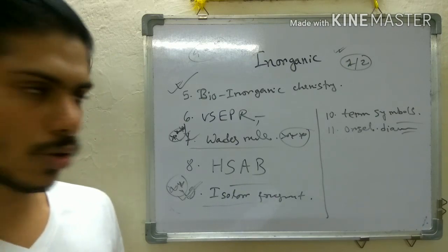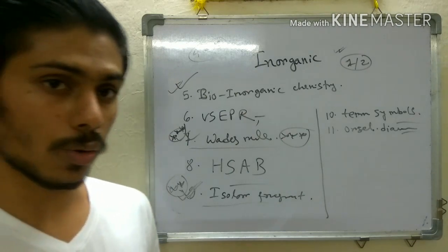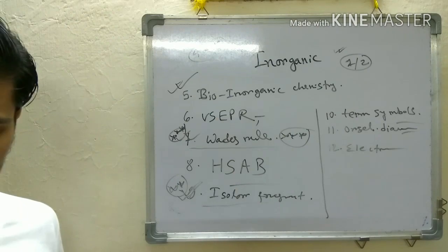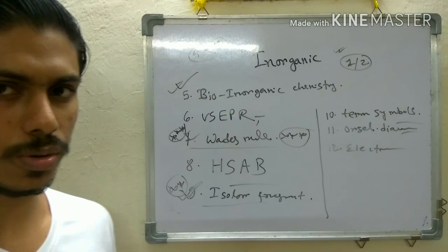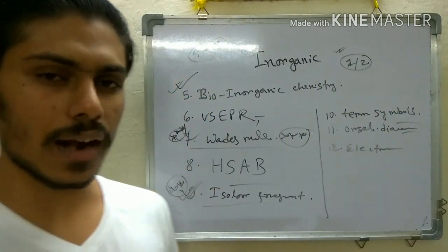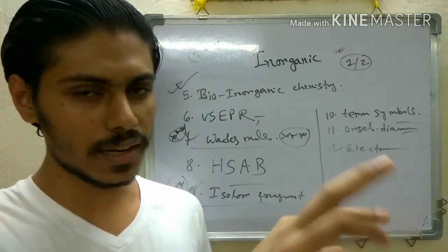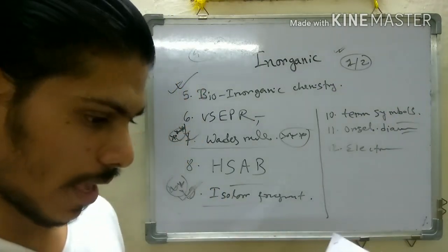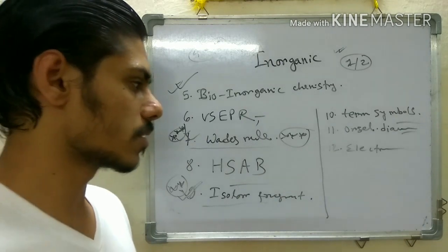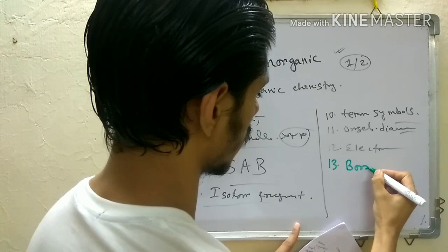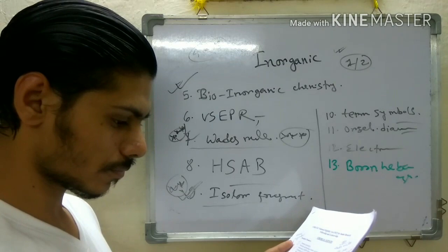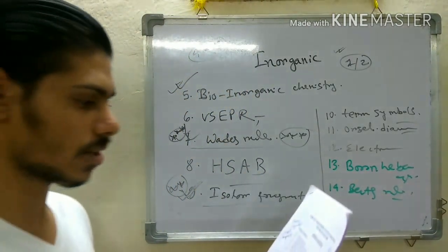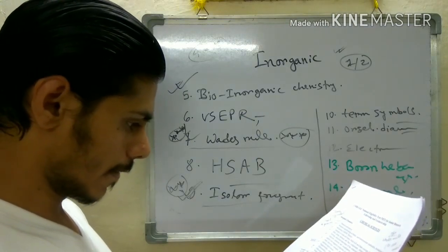Some topics that seem very basic but still carry questions include electronegativity, which is very important — questions have been asked from it repeatedly. You should at least remember the formula and the relationship between charge, radius, and electronegativity scales such as the Allred-Rochow scale. Born-Haber cycle questions also appear sometimes. Bent's rule, which is related to VSEPR theory and structure determination, is another important topic.